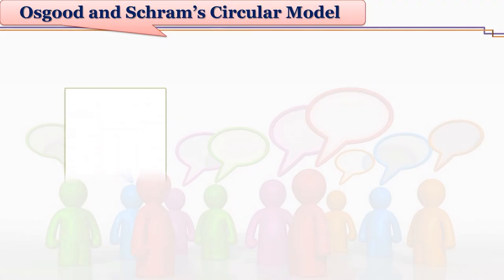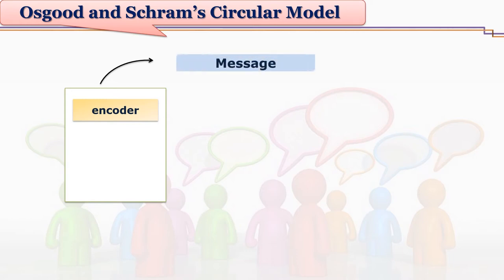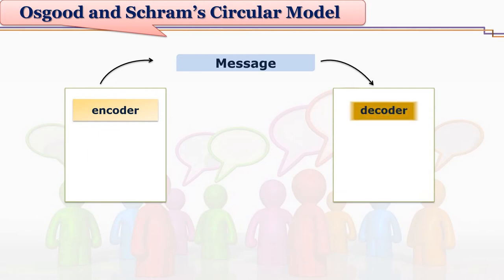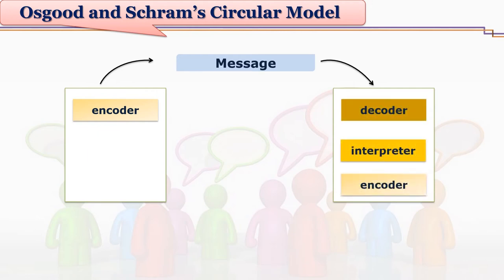Generally in communication we talk about senders and receivers. But we also realize that after the communication process begins, when it gets more and more complex, it becomes very difficult to identify senders and receivers.